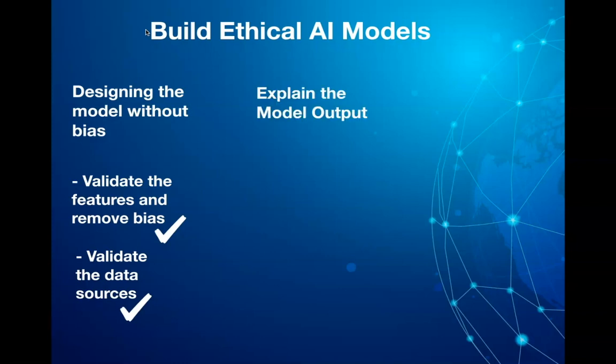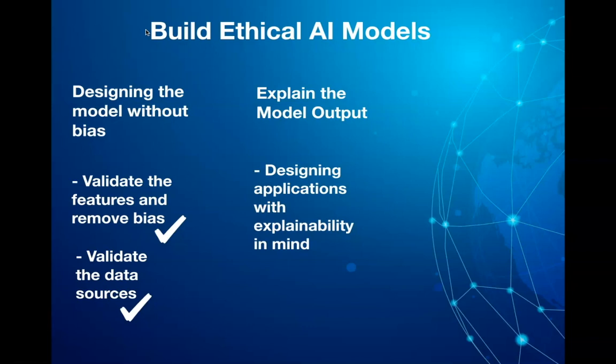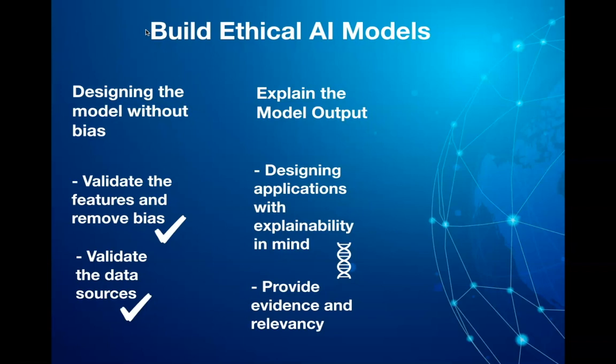The second step is to explain the model output. Designing applications with explainability in mind should be a key design principle. If the user receives an output from an AI algorithm, providing why an output was presented and how relevant it is should be built into the AI algorithm. This basically empowers users to understand why a particular piece of information is being presented to them, and to turn off any preferences associated with the AI algorithm for future recommendations.